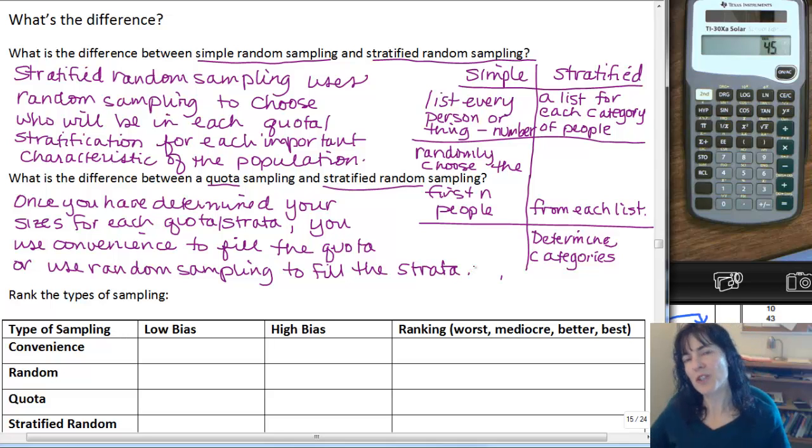So once you've determined how many people you want in each quota or strata, then if you're doing a quota sample, you're using convenience sampling to fill that number of people for that category. And if you're using stratified random sampling, then you are using random sampling to fill the strata.